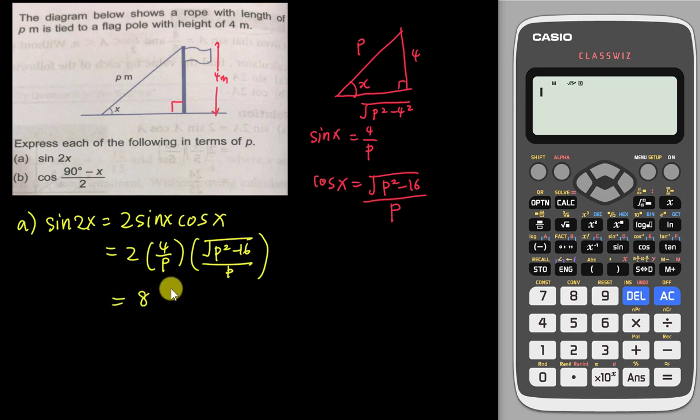All right, then I will just simplify this one. Should be 8, 2 times 4 is 8. 8 square root p squared minus 16 over p squared. P times p, I get p squared.